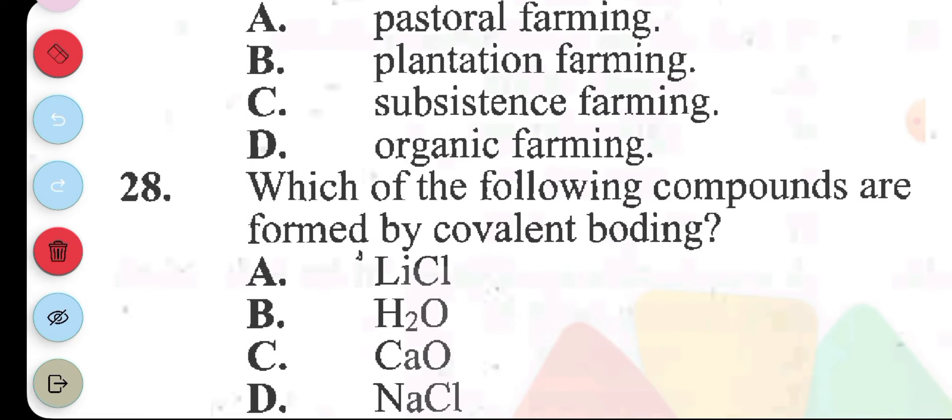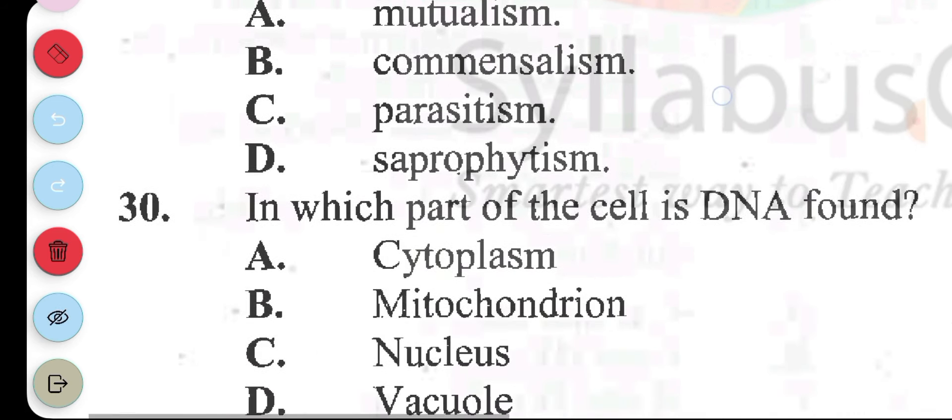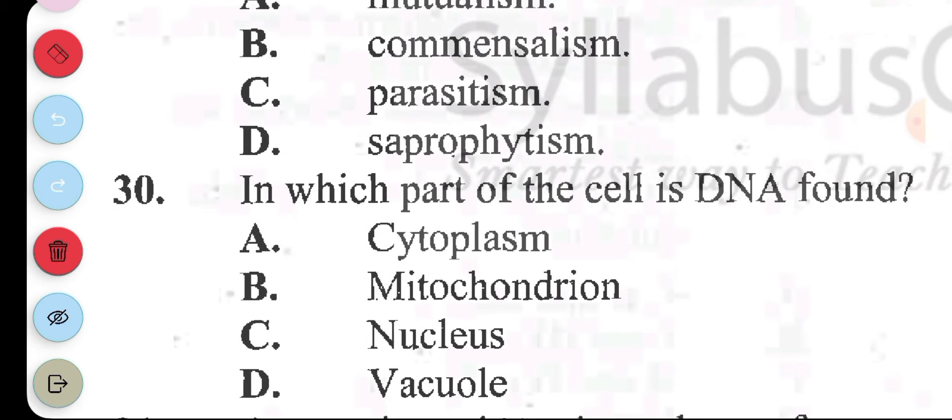Question 28: which of the following compounds are formed by covalent bonding? You have lithium chloride, water, calcium oxide, and sodium chloride. Answer to this is B, water. Formation of bond by sharing of electrons. Question 29: a symbiotic relationship in which both species benefit is called A, mutualism. B, commensalism. C, parasitism. D, saprophytism. The answer to question 29 is A, mutualism. Question 30: in which part of a cell is the DNA found? A, cytoplasm. B, mitochondrion. C, nucleus. D, vacuole. The answer to question 30 is C, nucleus.